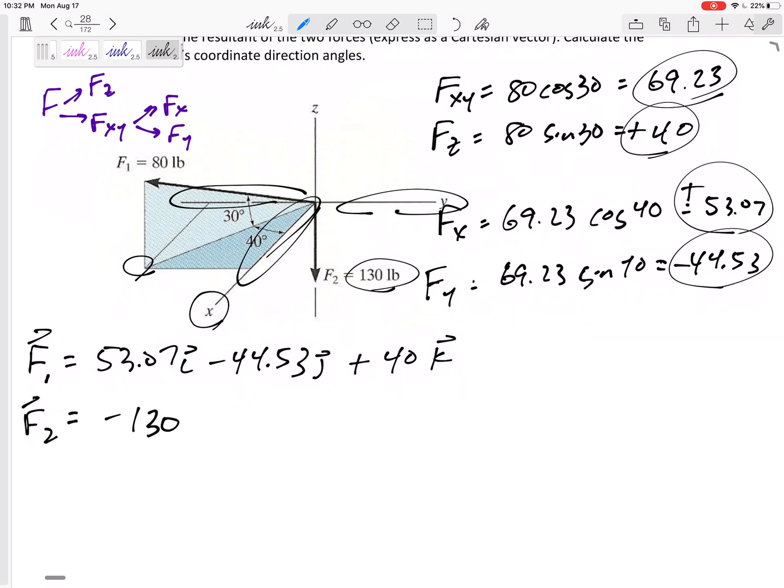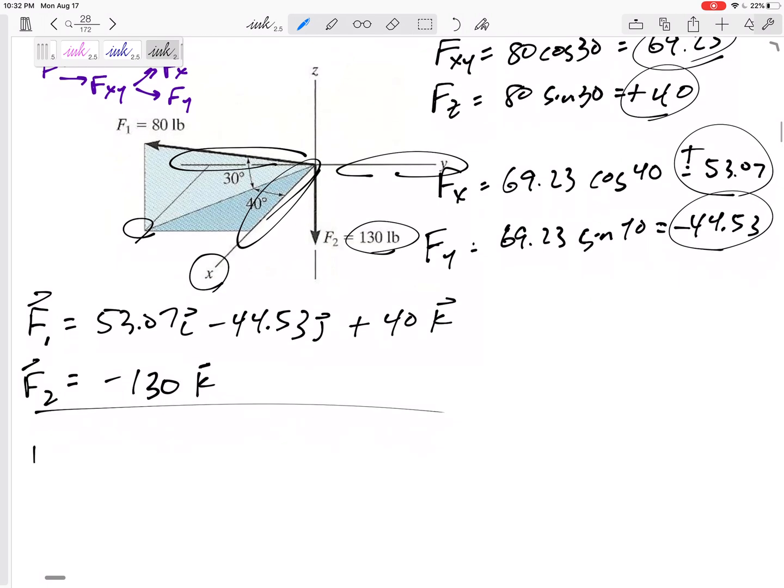All right, so that's that vector. F2 is already just negative 130 in the k. So now when I add those, only add the i's together, 53.07 in the i, only add the j's together.